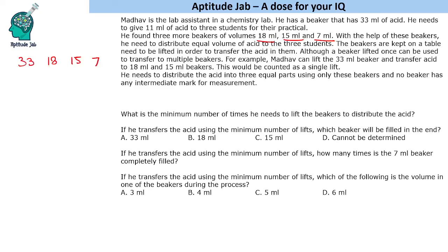So you can measure 18 ml, 15 ml but you cannot measure 10 ml in the 15 ml beaker. Similarly you cannot measure 6 ml in the 7 ml beaker. Using this we have to make the measurements. The question is what is the minimum number of times he needs to lift the beakers to distribute the acid. Basically minimum number of transfers that he has to make and all the questions are based on it.